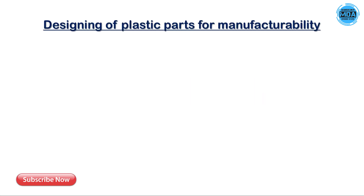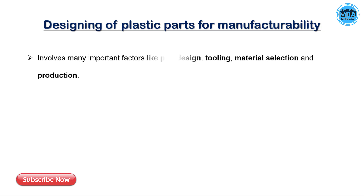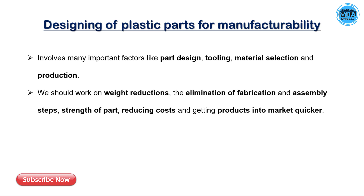Hello friend. In this video we will discuss the designing of plastic parts for manufacturability, which involves many important factors like part design, tooling, material selection, and production. It is very essential to build the part as per the functional need by keeping the design intent or the end use of the final product in mind. We should work on weight reduction, elimination of fabrication and assembly steps, strength of the part, reducing cost, and getting the product to market quicker.